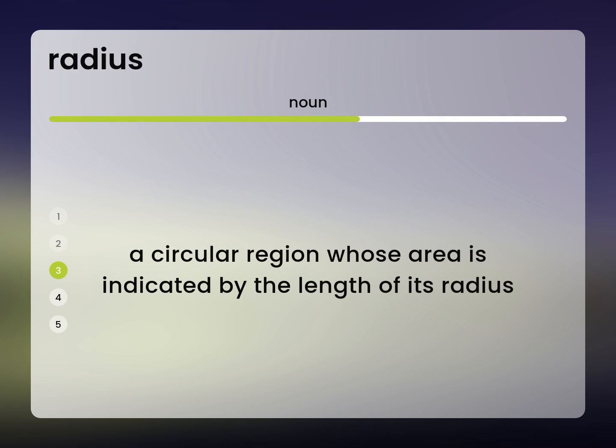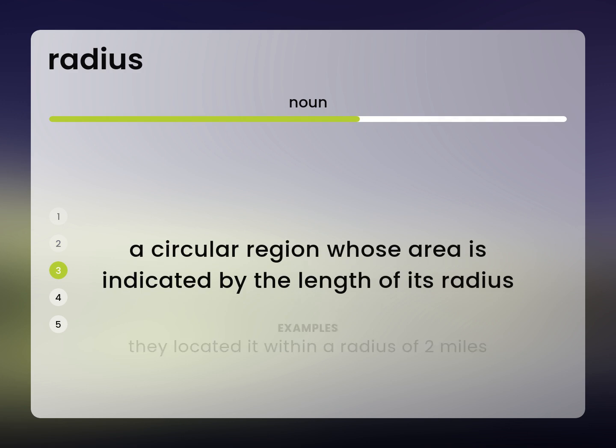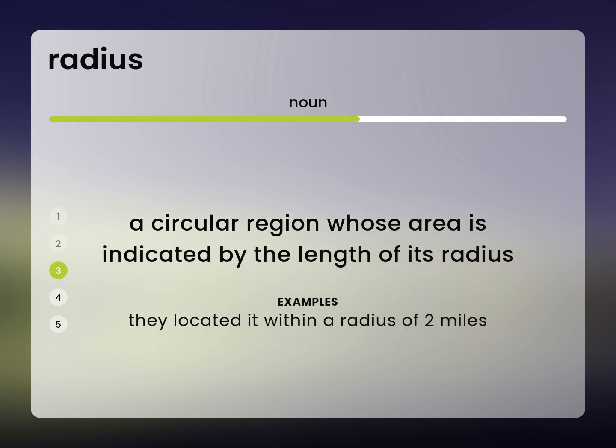A circular region whose area is indicated by the length of its radius. They located it within a radius of 2 miles.